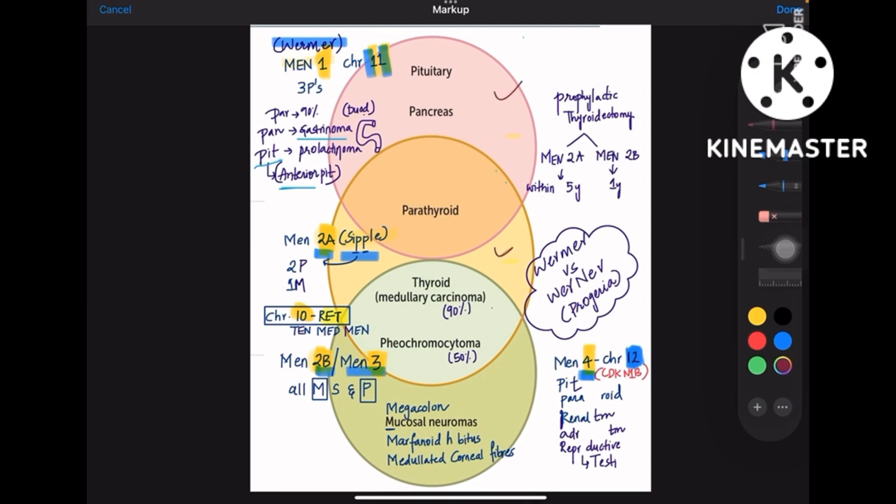First circle is about MEN1, the second yellow one is about MEN2A, and the third green one is about MEN2B. Let us learn MEN4 separately.